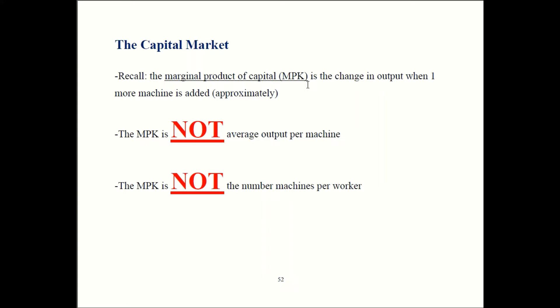The MPK is the change in output when you add one more machine to your firm. That's an approximation. Watch out for these MPK myths. MPK does not refer to average output per machine. A lot of my students think that, but it is not true. Do not fall for that trap. Another myth: MPK is not number of machines per worker. That is also not true. This happens just about every semester. I ask my students about this on exams. A lot of people fall for these myths. But to be clear, you were warned. MPK is change in output when one more machine is added.